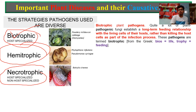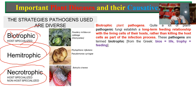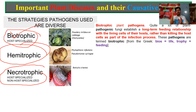Biotropic plant pathogens establish a long-term feeding relationship with the living cells of their host, rather than killing the host cell, apart from the infection process. These pathogens are termed biotropic — 'bios' means life and 'trophy' means feeding. Biotropic organisms do not kill the host completely. The pathogen can survive only as long as the host is alive; once the host dies, the biotropic pathogen also dies. So biotropic pathogens have a long-term feeding relationship.